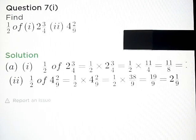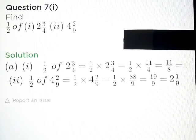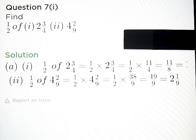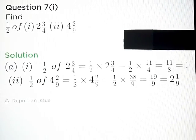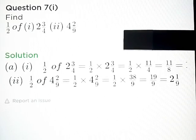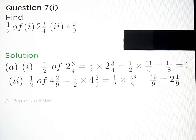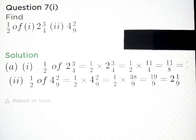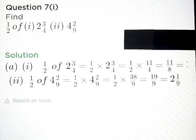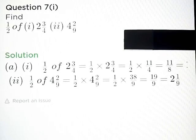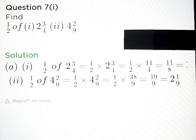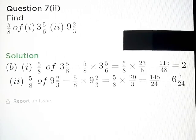Question number 7, Part A: Find 1 upon 2 of 2 and 3 upon 4, and 4 and 2 upon 9. Answer Part A: 11 upon 8, and Part B: 19 upon 9. We can also write 19 upon 9 in mixed fractions as 2 and 1 upon 9.